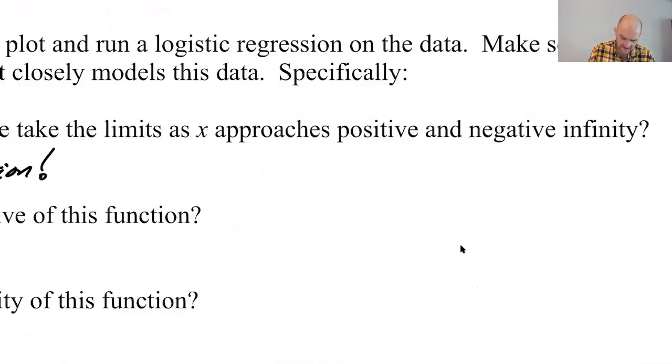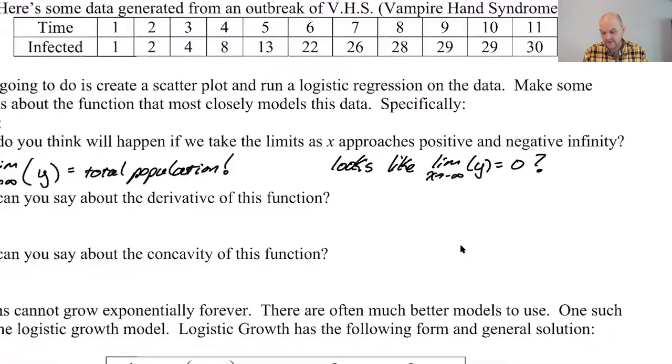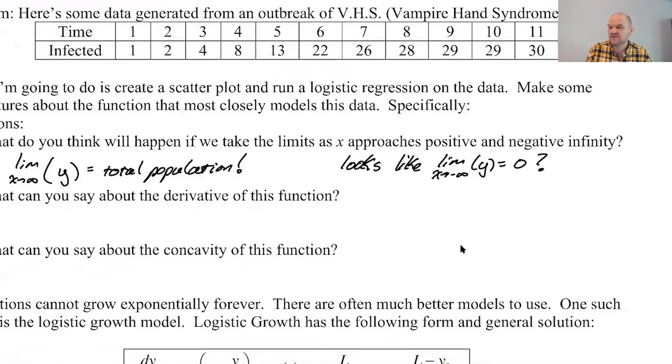You go to negative infinity, it looks like it goes to zero. You don't really get asked that question, so let's say equals zero with a question mark. Because if you think about it as an infection, I guess if there never was an infection, then suddenly there was, then yeah, it was zero forever.